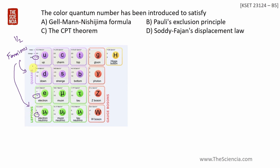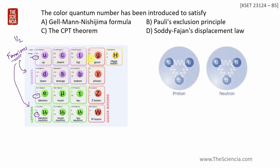The nucleus is composed of protons and neutrons. Proton configuration is 2 up quarks and 1 down quark. Neutron configuration is 1 up quark and 2 down quarks.